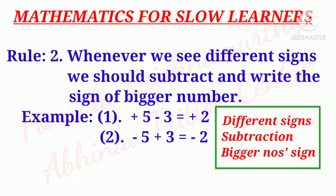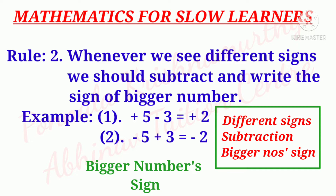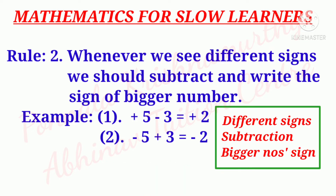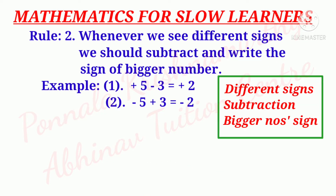Rule number two: whenever we see different signs, we should subtract and write the sign of the bigger number. Example: plus 5 minus 3 is equal to plus 2. Minus 5 plus 3 is equal to minus 2. Different signs — subtraction — always write the bigger number's sign.